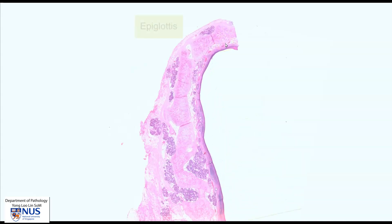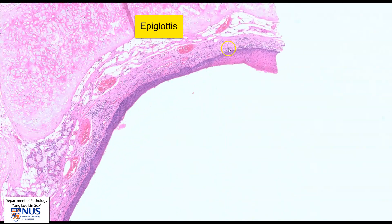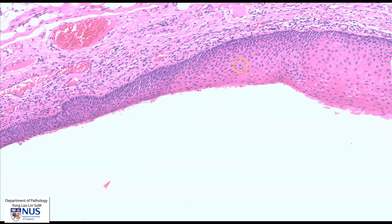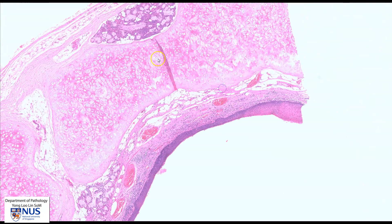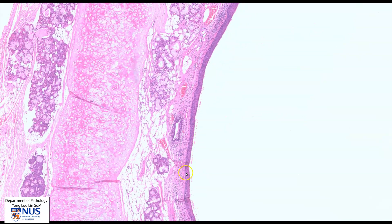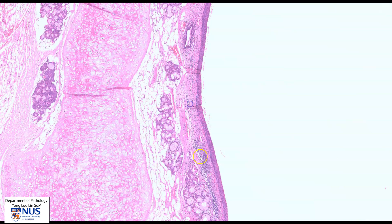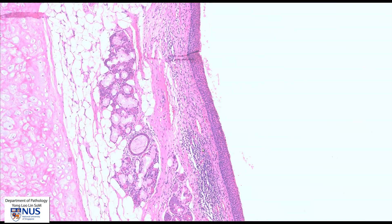Superiorly, we have the epiglottis, which is covered here on its posterior surface by non-keratinizing stratified squamous epithelium. We can see here the cartilage of the epiglottis, and as we move down, usually the more inferior aspects of the epiglottis is actually covered by respiratory type epithelium, which means that we should see columnar ciliated cells.